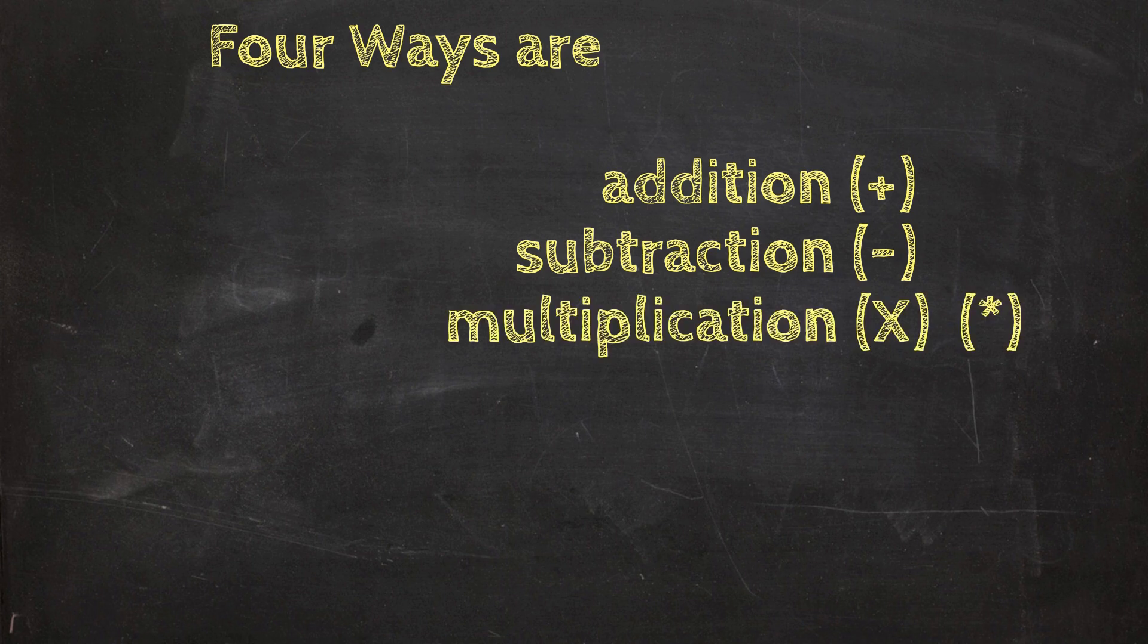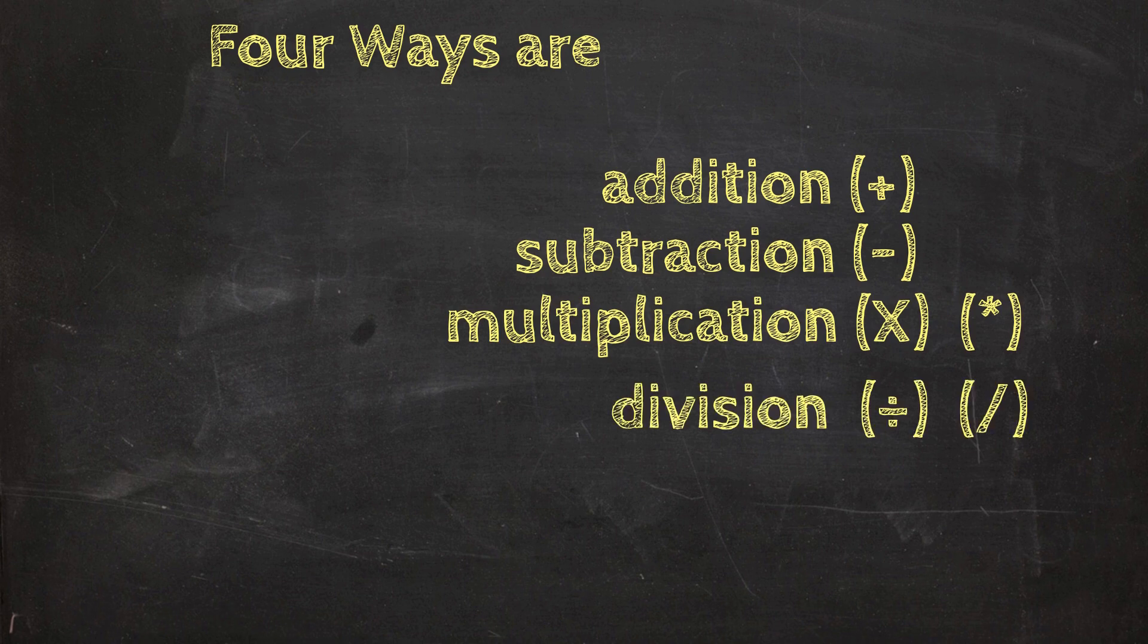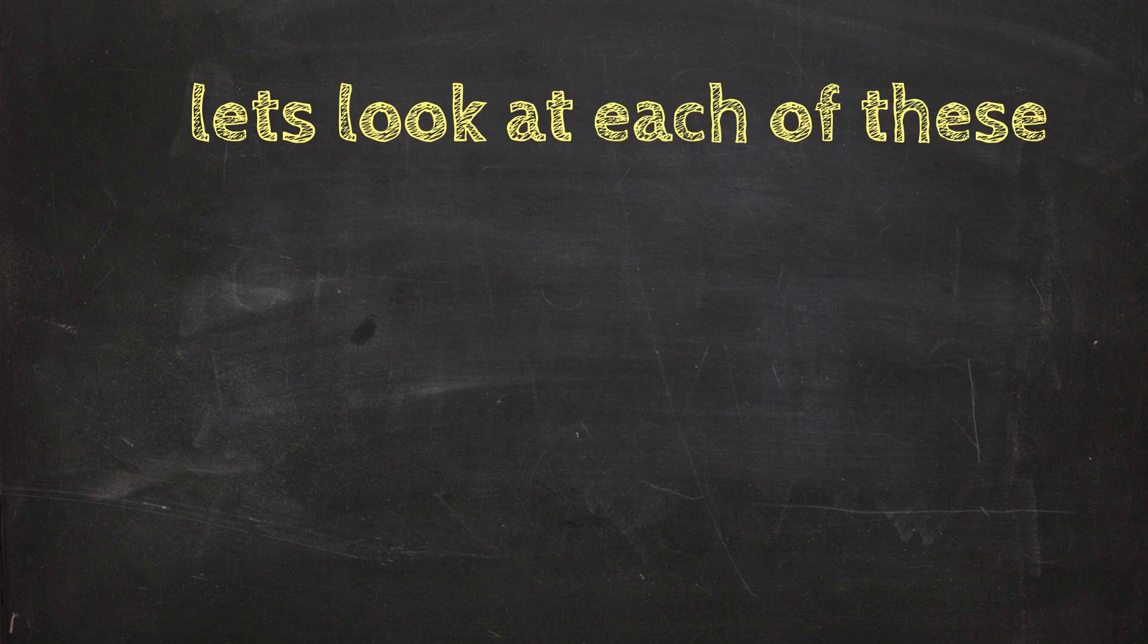Two symbols for multiplication: there's the X and there's the computerized symbol which is a star or an asterisk. Division also has two symbols: the division bar and also the computerized slash. But be careful, in fractions the slash represents a fraction.